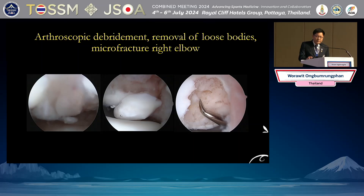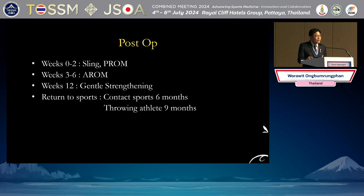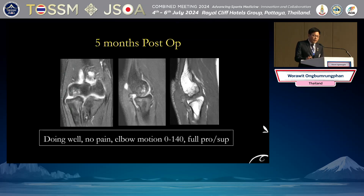Intraoperative findings showed loose bodies. I performed arthroscopic debridement, removed all loose bodies, and performed microfracture at the capitulum area. I applied a sling for two weeks, and gradual range of motion and strengthening were started three months after surgery. At five months follow-up, he is doing well — no pain and full range of motion of the elbow.